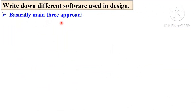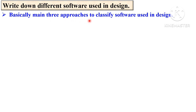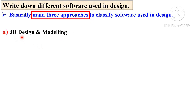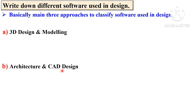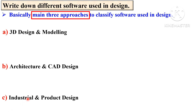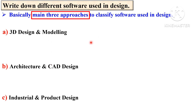There are three main different approaches to classify software used in design. There are lots of different software used in design, but you can divide them into three main approaches: first, 3D design and modeling; second, architecture and CAD design; and third, industrial and product design.